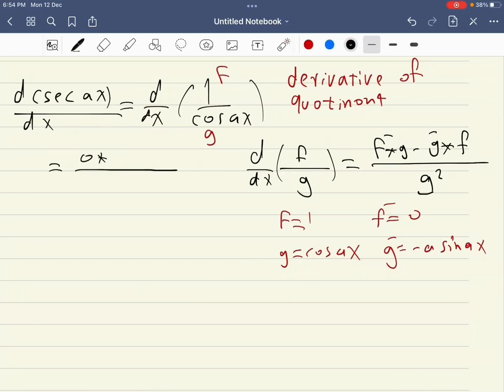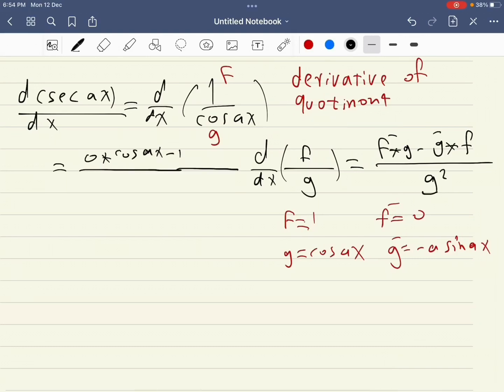It equals zero times g, where g is cosine ax, minus one times minus a sine ax, all over cosine ax squared. We can simplify this as a sine ax over cosine squared ax.